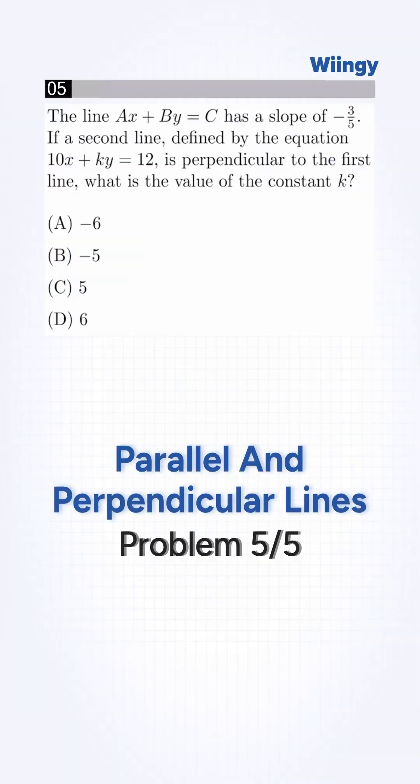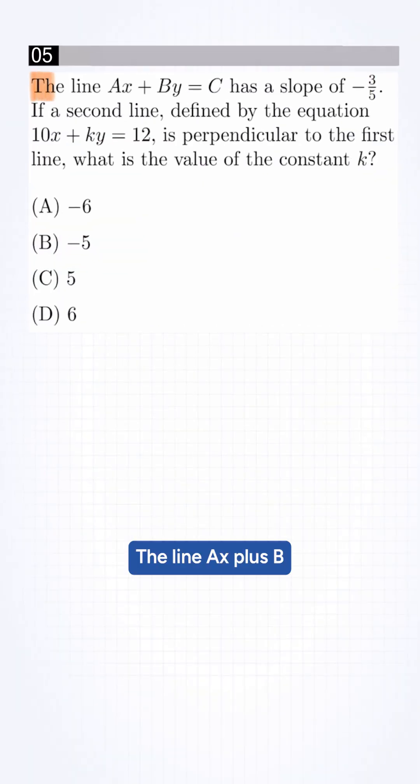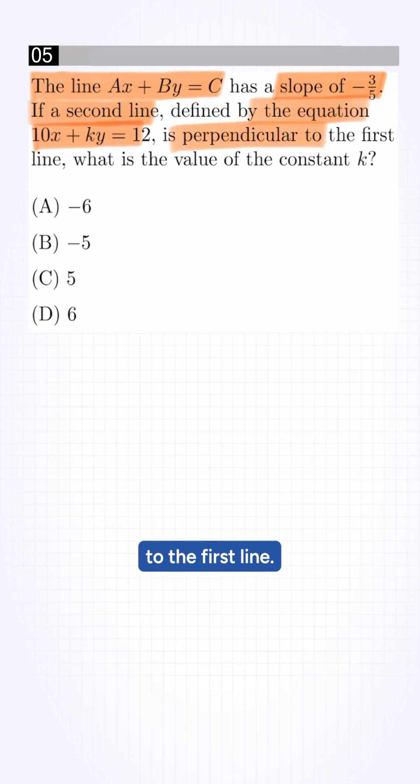How fast can you solve this SAT math problem? The question says the line ax plus by equals c has a slope of minus 3 by 5. If the second line defined by the equation 10x plus ky equals 12 is perpendicular to the first line, we need to find the value of constant k.